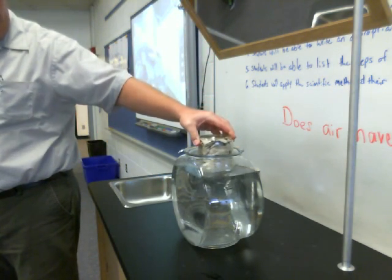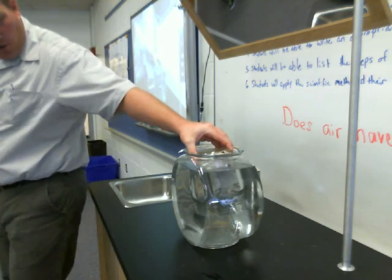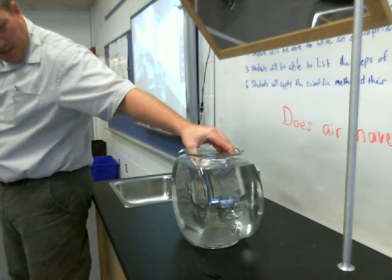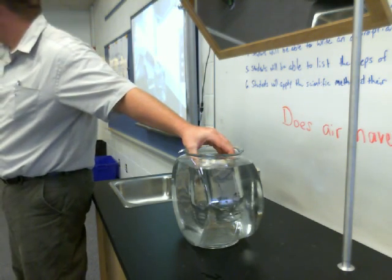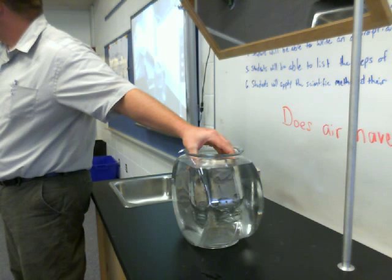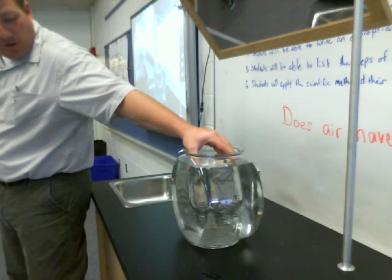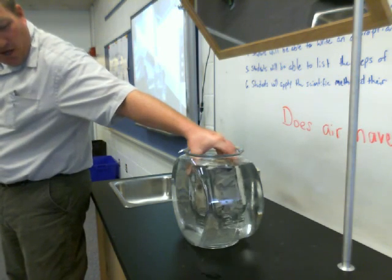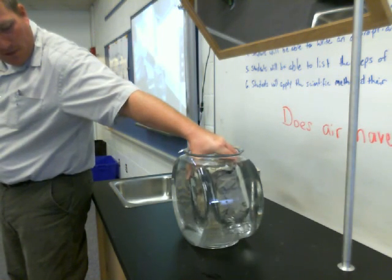The nice thing with these brown paper towels is you all know from past experience with these paper towels — if the paper towels were getting wet, what would you see? They'd turn darker brown, wouldn't they? Are they getting wet? No.